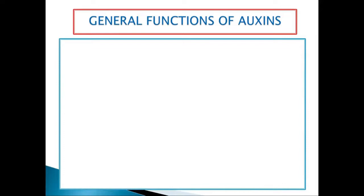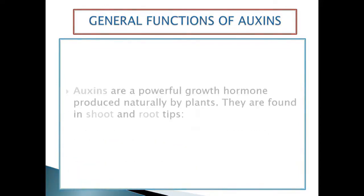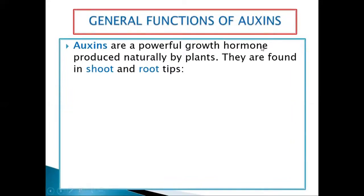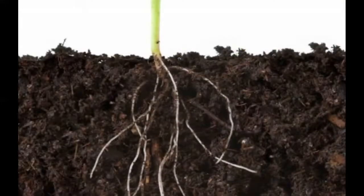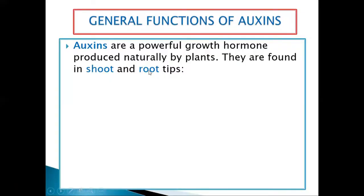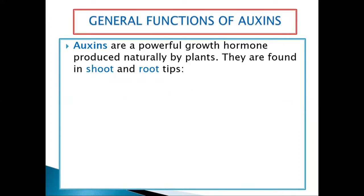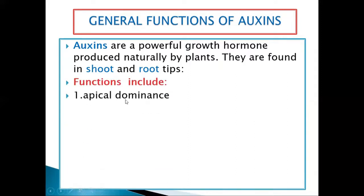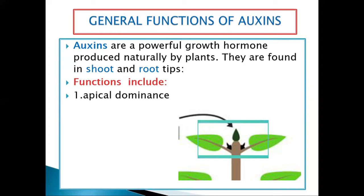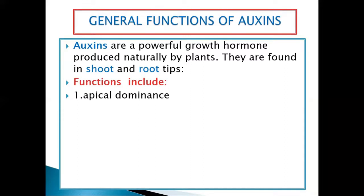Auxins are a group of hormones — just chemicals. Auxins are powerful growth hormones produced naturally by plants. They are found in the shoot and the root tips — the last part of the shoot and the last part of the root. One of the functions of auxins includes apical dominance. 'Apical' comes from the word 'apex,' meaning the tip. It causes a tree to grow straight and tall without producing too many branches.